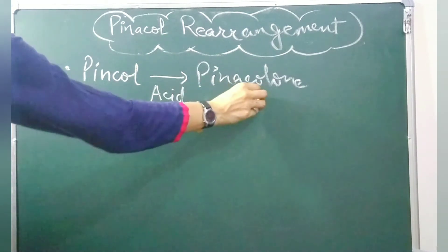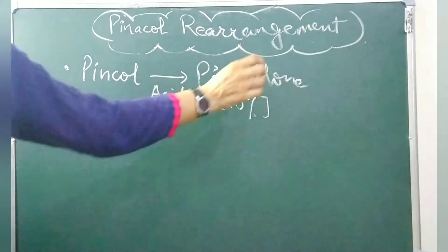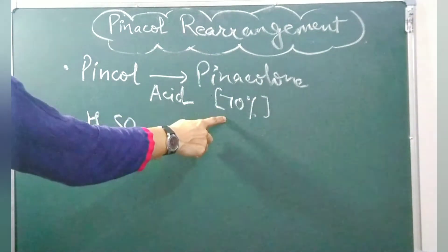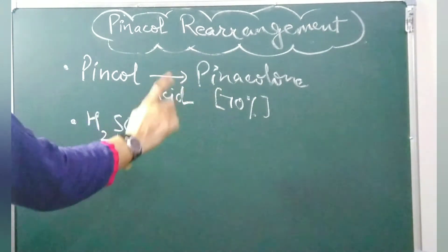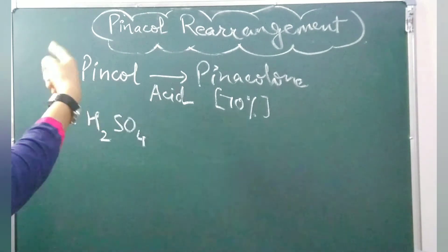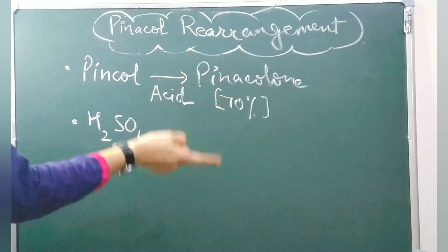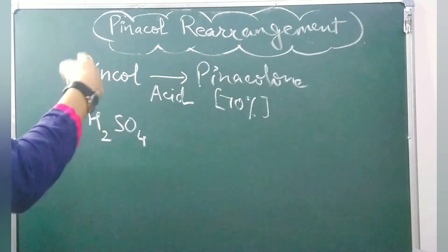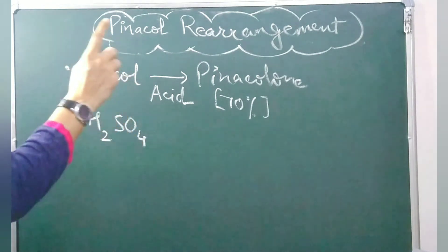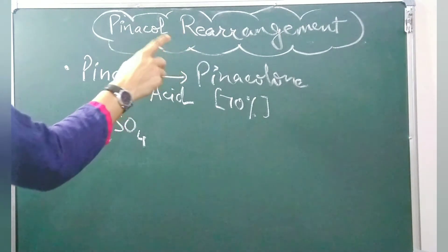The yield of pinacolone is 71%. We will see the reaction — what is pinacol, what is a 1,2-diol, and how pinacolone is formed. First we will take the reaction, after that we will discuss the mechanism — how this reaction is taking place and why we are calling it a rearrangement.